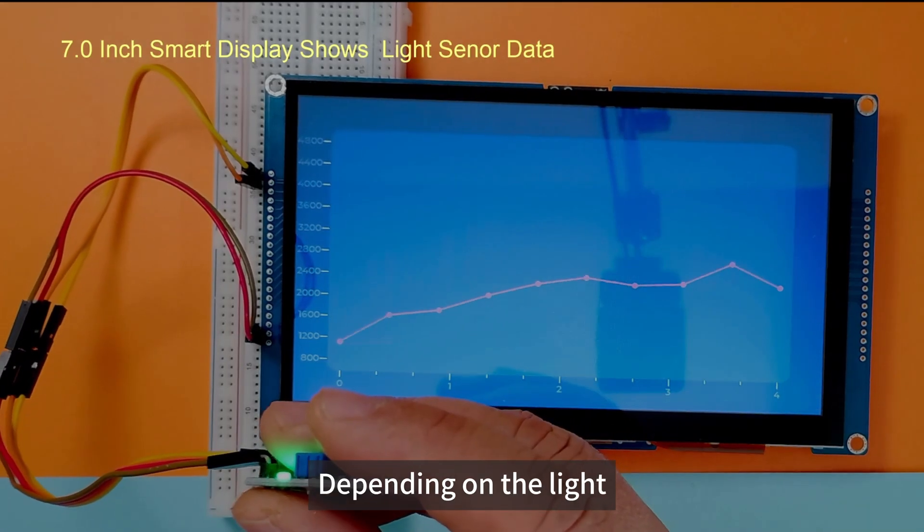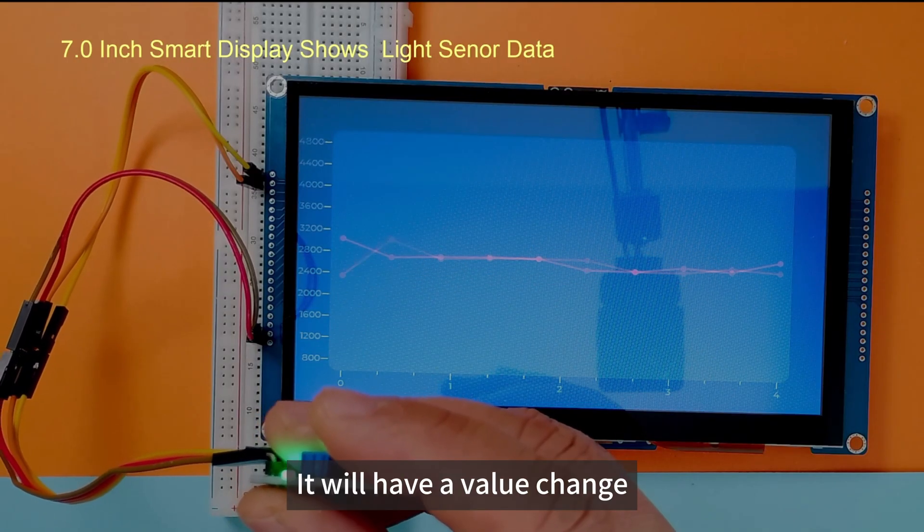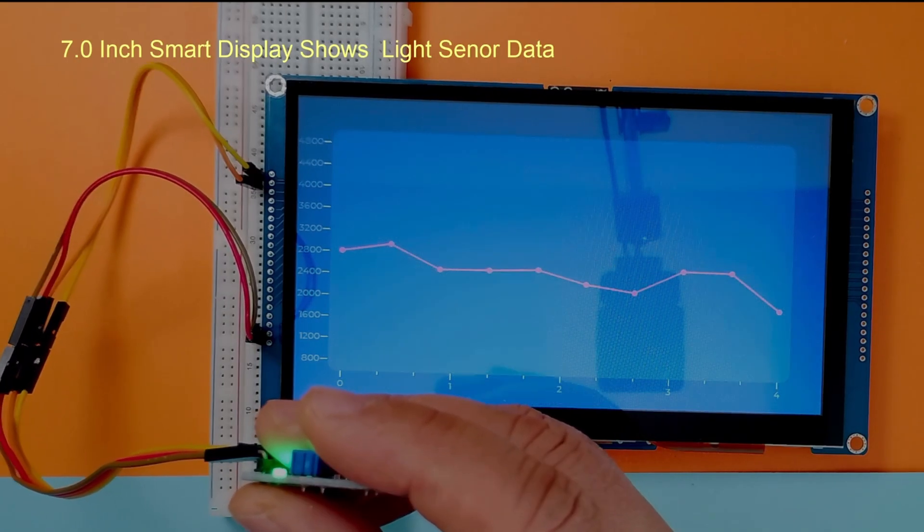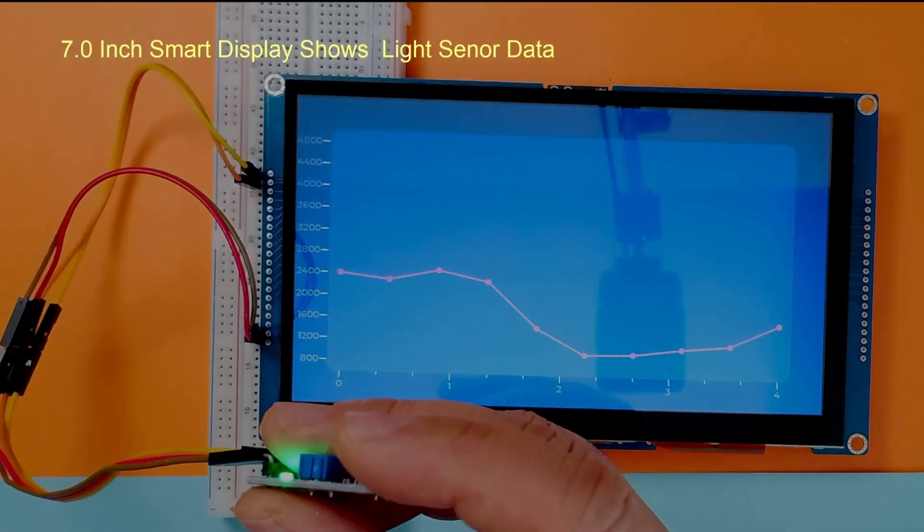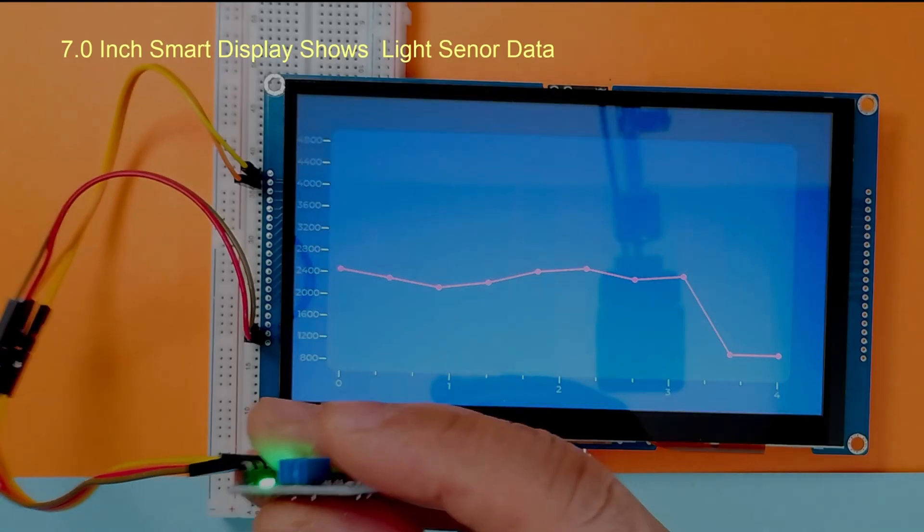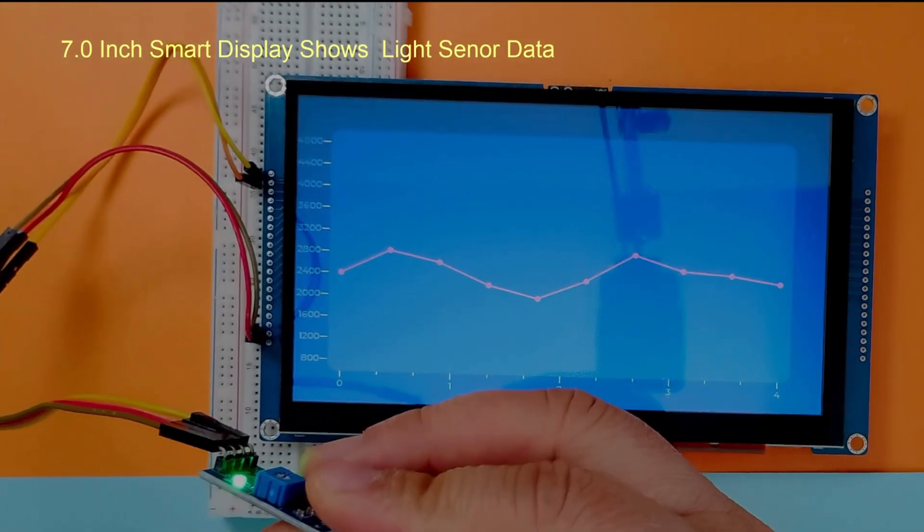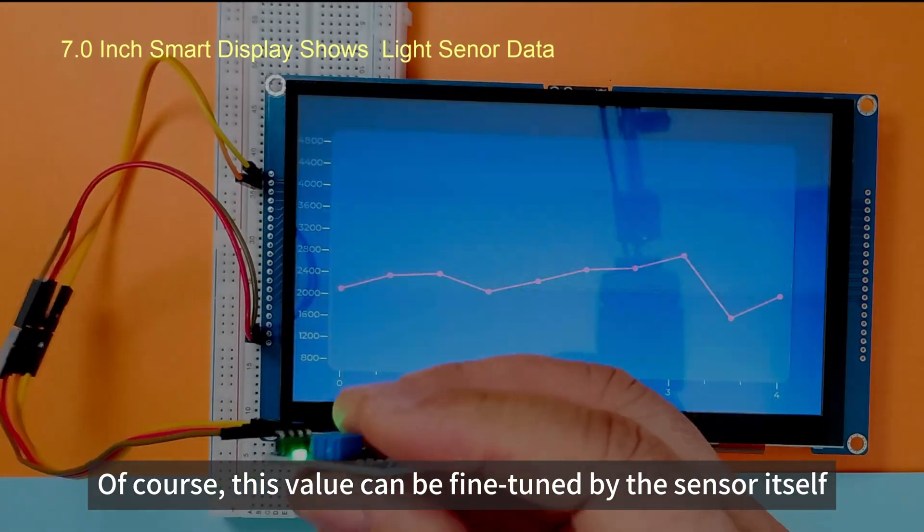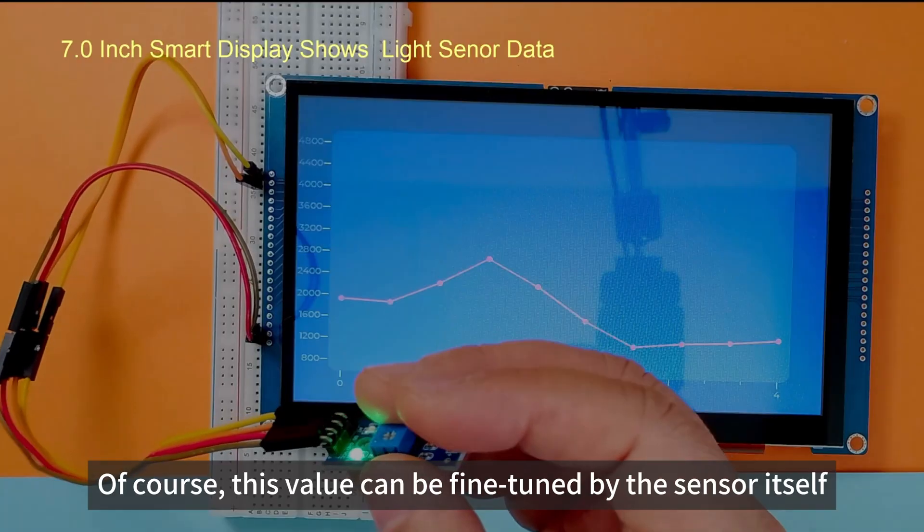Depending on the light, it will have a value change. You can see that the weaker the light, the higher the value. Of course, this value can be fine-tuned by the sensor itself.